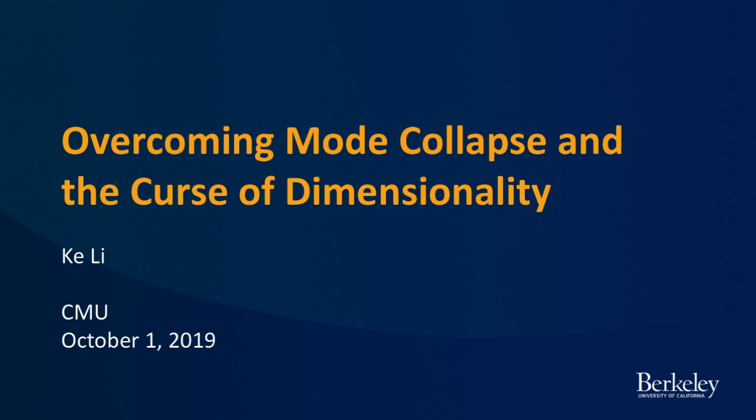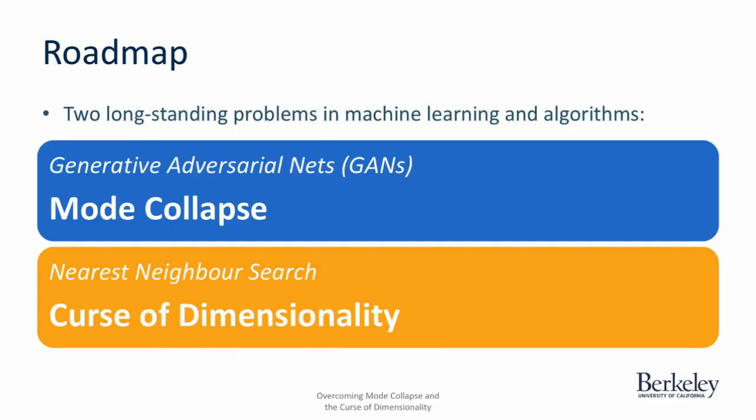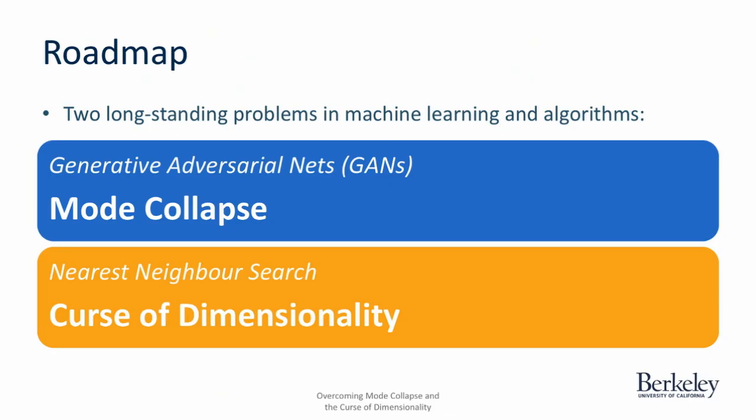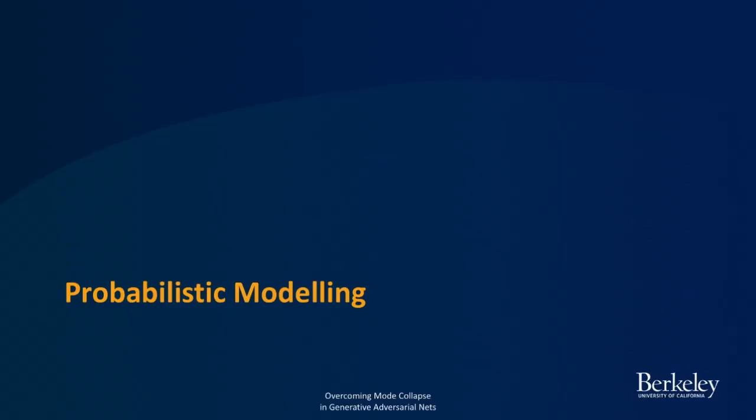Today I'm going to talk about how to overcome two problems: mode collapse and the curse of dimensionality. Mode collapse is of course a long-standing problem in GANs, so I'll talk about that first. Then I'll talk about how to overcome the curse of dimensionality in nearest neighbor search. It turns out that those two topics are actually somehow connected, and we'll find out exactly how.